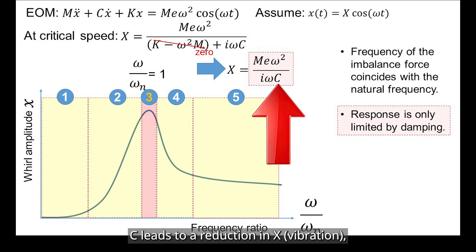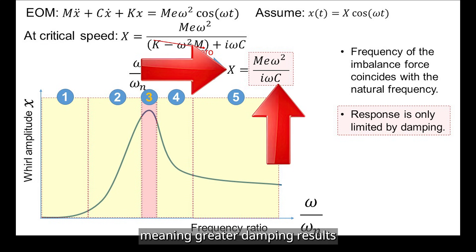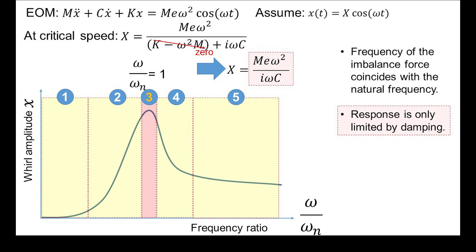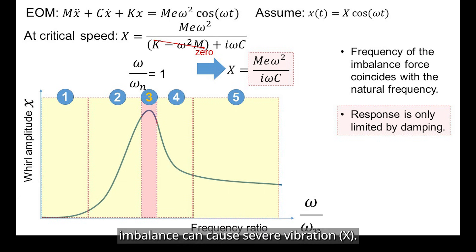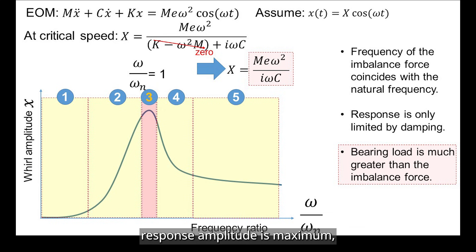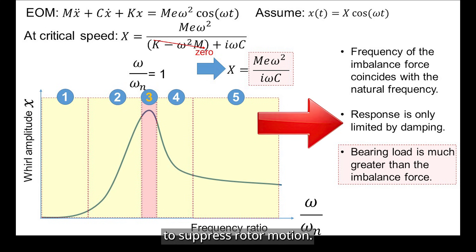An increase in C leads to a reduction in X, meaning greater damping results in a lower vibration amplitude. If damping is low, even a small imbalance can cause severe vibration. The key takeaway at this speed is that response amplitude is maximum, and also response lags 90 degrees, and the bearing loads are high, and damping is crucial to suppress rotor motion.